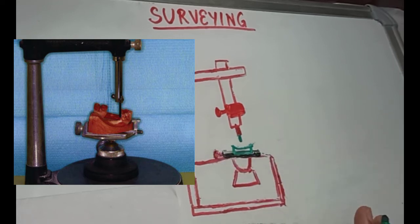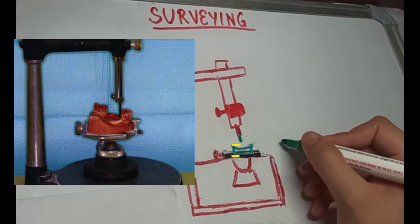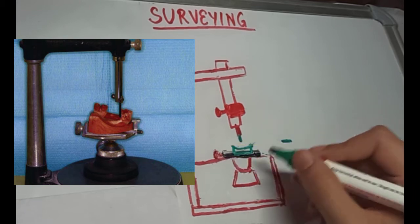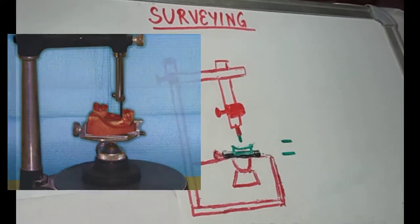Now to begin with, ensure that the occlusal plane of the cast is parallel with the base with 0 degree tilt. Initially, we place it with 0 degree tilt and it should be at the level to the table.